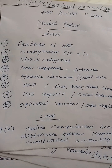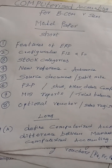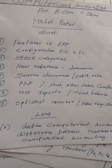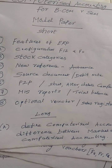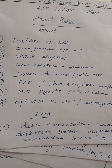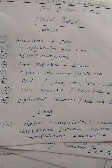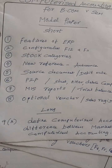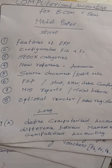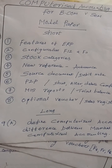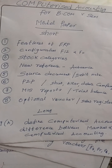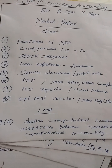Stock categories — if stock category is not given, stock groups will be given. Keep in mind new reference and advance. If source document is not given, you will definitely get a question on debit note and credit note.